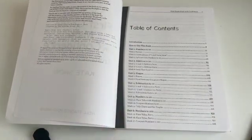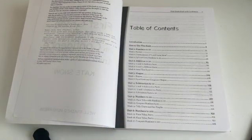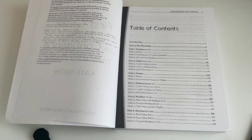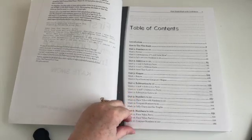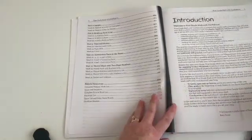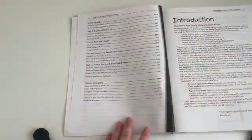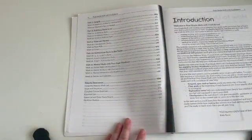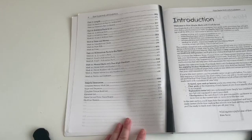Here's unit one numbers to 10, unit two addition to 10, unit three shapes, unit four subtraction to 10, unit five numbers to 20, unit six numbers to 100, unit seven length, unit eight addition facts to 20, unit nine time and money, unit 10 subtraction facts in the teens, unit 11 mental math with two digit numbers.